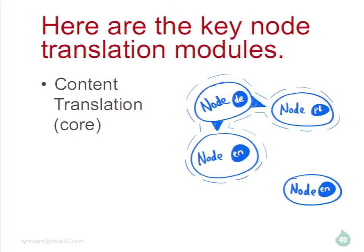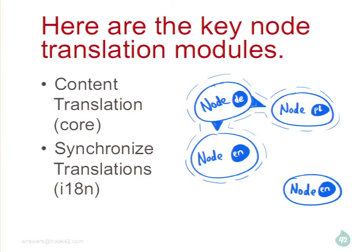For node translation, there's the core module called content translation. The other one you should have with it is called synchronized translations — that's part of the i18n suite, which is a whole package of about 20 different modules called internationalization. What synchronized translations does is let you configure certain fields you don't want to translate — like an image field — and it synchronizes that field across your different translation nodes.